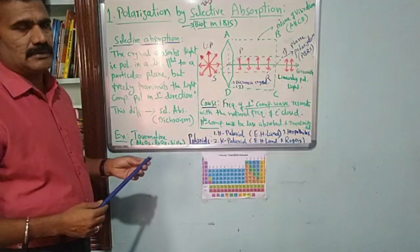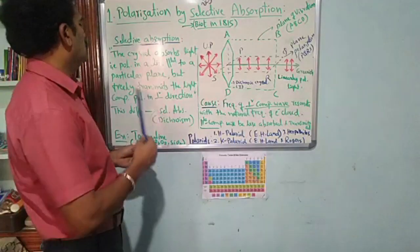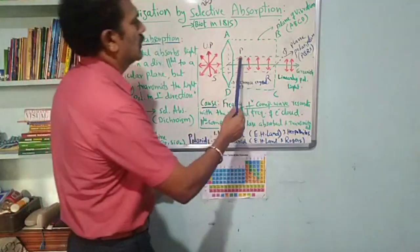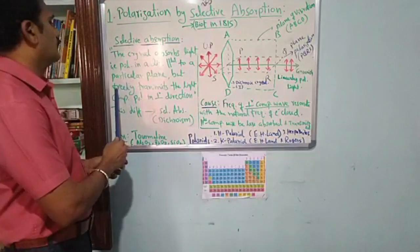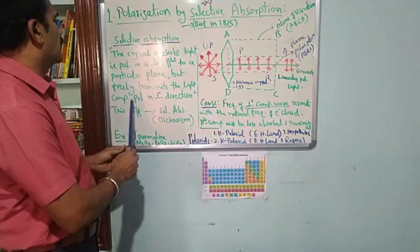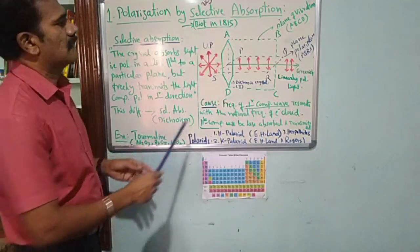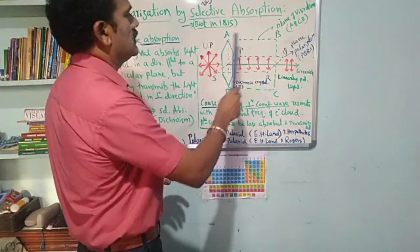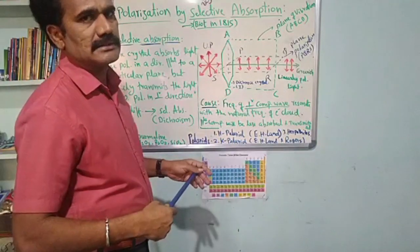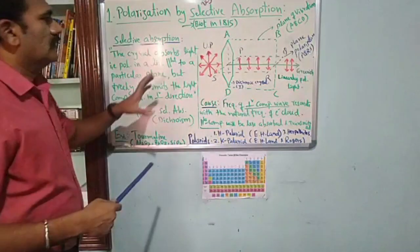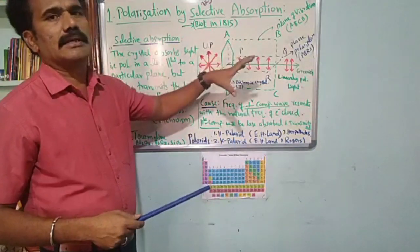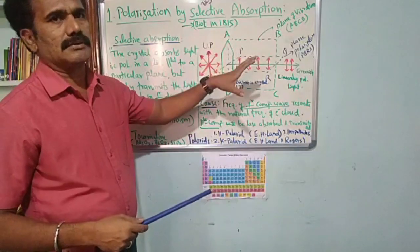light components polarized in a perpendicular direction, meaning the ABCD plane in which vibrations persist. This difference between the two planes in terms of absorption is called selective absorption.